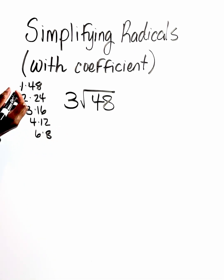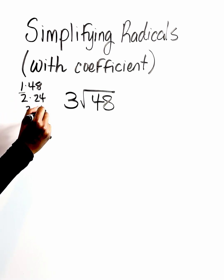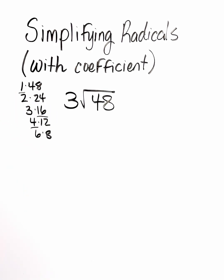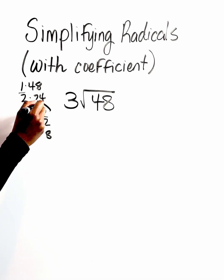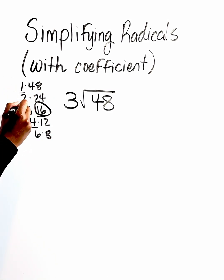So we're going to underline our perfect squares. We have one, sixteen, and four. Of course, we're going to choose our largest perfect square, which means this is the factor pair that we're going to use. So we're going to rewrite.